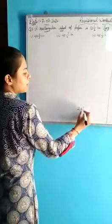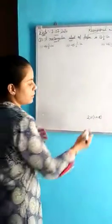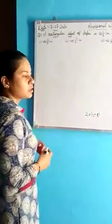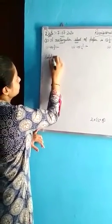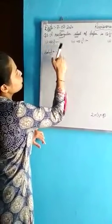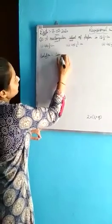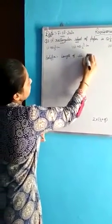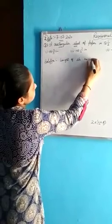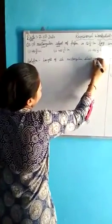As you know that it is a rectangular sheet, its perimeter will be — as you know — the perimeter of a rectangle is 2 into (l + b). So we need the length as well as the width. Write down the solution of this question and you have to choose the correct option from these four. Firstly, write down the length of the rectangular sheet of paper.